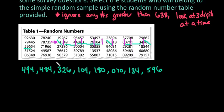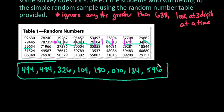So the people that I would go and survey is whoever was assigned number 494, 484, 326, 104, 180, 70, 134, and 596.